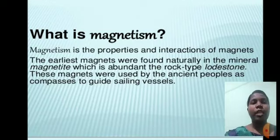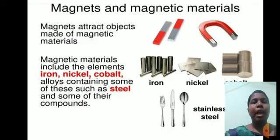These magnets were used by ancient peoples as compasses to guide sailing vessels. Magnets attract objects made of magnetic materials. Magnetic materials include the elements iron, nickel, cobalt, alloys containing some of these such as steel, and some of their compounds.